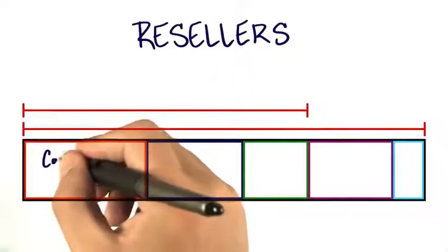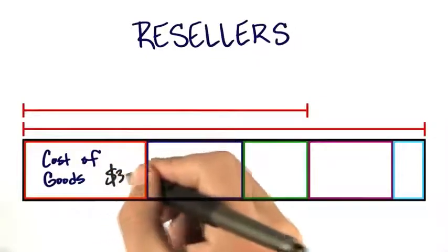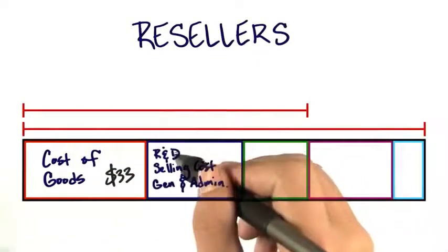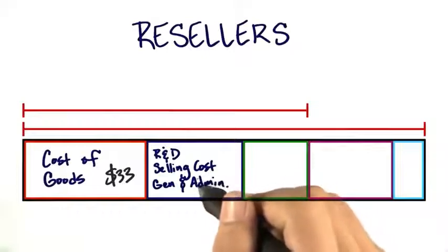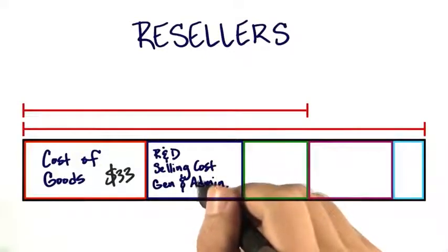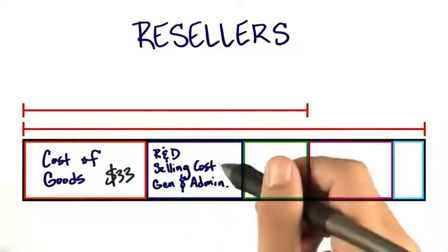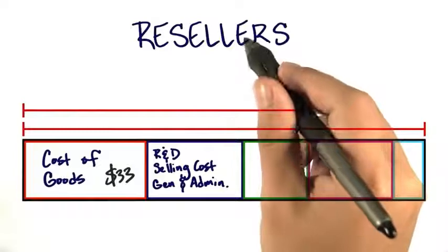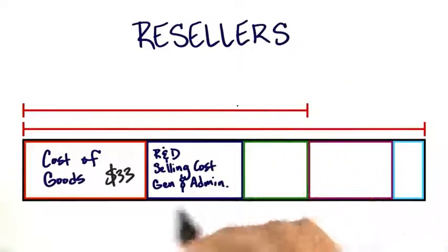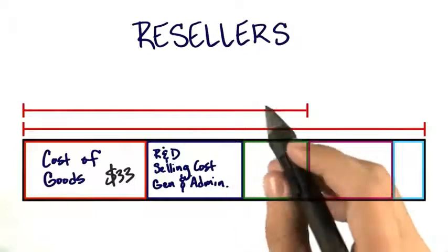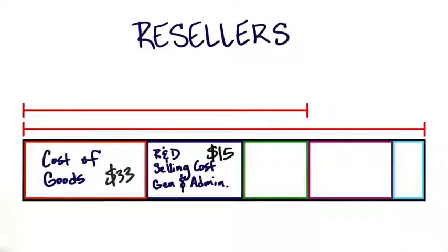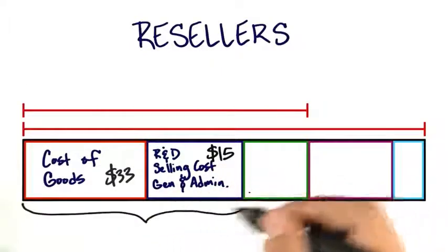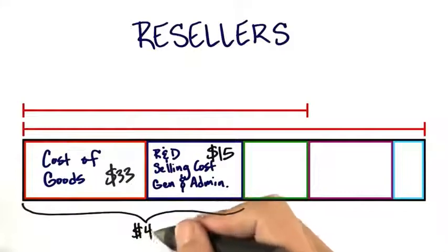As you can see, we still have the same cost of goods to manufacture the product as before: $33. Our R&D might be the same and keeping the lights on in the building might be the same, but our selling costs are lower because we're selling through resellers. We still need a direct salesperson, but instead of talking to every possible end user, they're talking to a few resellers. So our SG&A plus R&D is now $15 rather than $20, and the total cost to get the product out the door is $48.